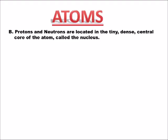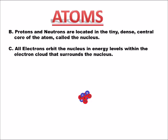Atoms are mostly empty space. The mass of the atom is contained in a very tiny, dense central nucleus — that's where the protons and neutrons are. Here's a nucleus: protons are drawn in red, labeled with a P and a plus sign, and neutrons are drawn in blue, labeled with an N. The proton carries a positive electrical charge.